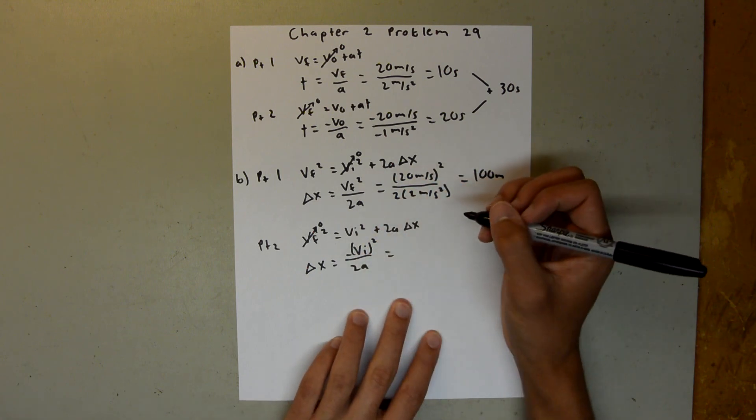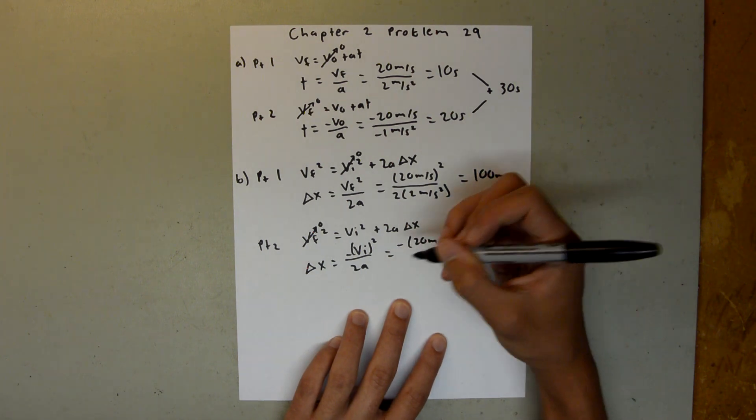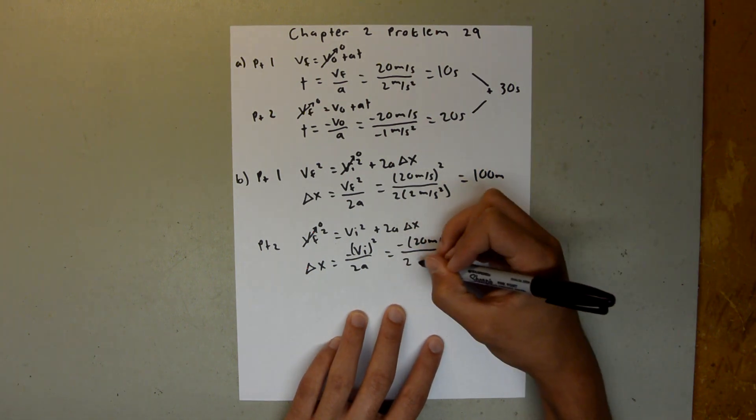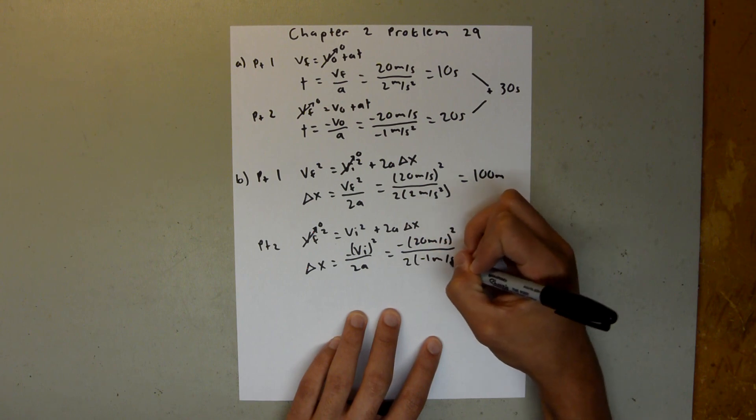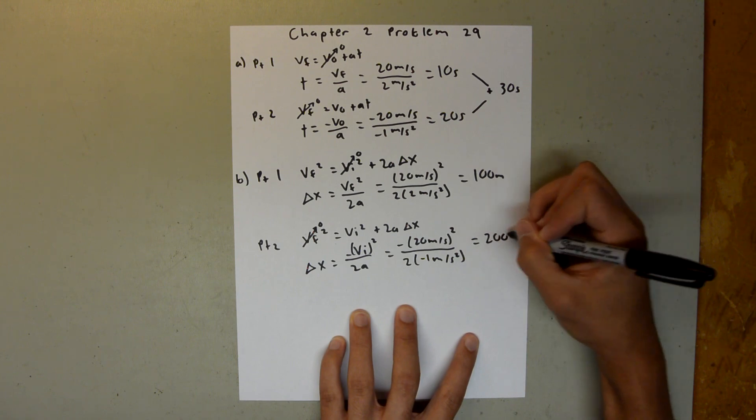So then this is going to be equal to negative 20 meters per second squared over 2 times negative 1 meter per second squared, and when you plug that into your calculator, you should get 200 meters.